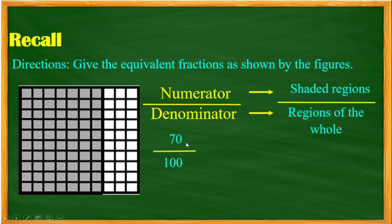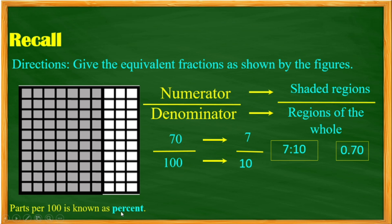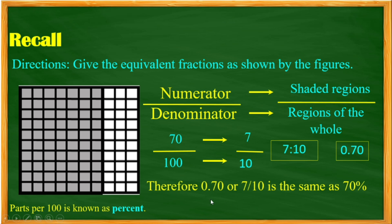We can express this one into simplest form. The simplest form is 7 tenths. And 7 tenths can also be expressed in decimal numbers. Because parts per hundred is known as percent, we can also express 70 hundredths into 70 percent. Therefore, 70 hundredths or 7 tenths is the same as 70 percent.